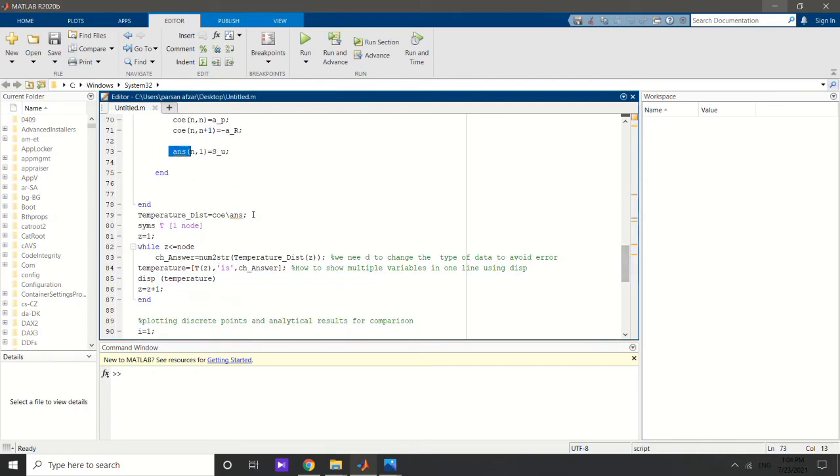So the temperature distribution is going to be matrix of coefficient backslash matrix of answers. Up to here we have gained the temperature distribution. In order to visualize them - to show them to the user in a better way - I define a matrix.